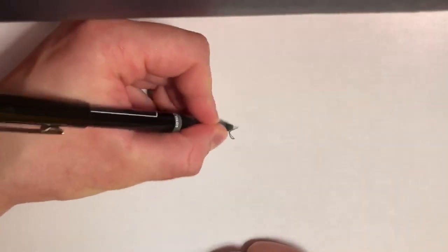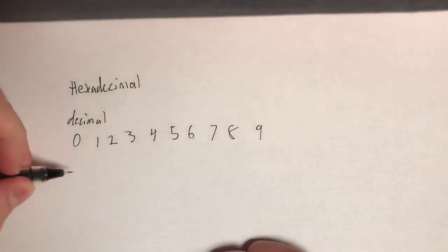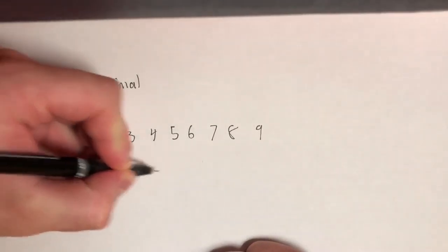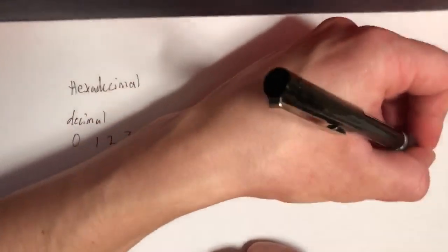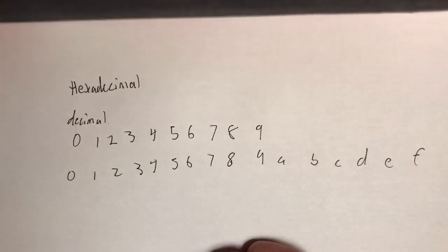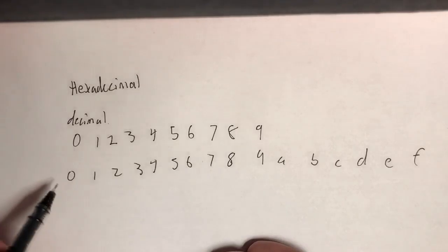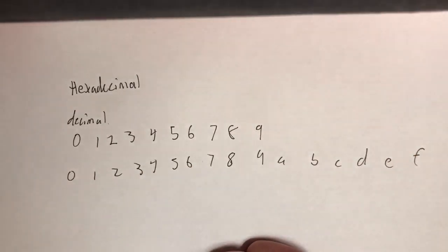So hexadecimal is simply a grouping of four bits into a single digit. Normal decimal is 0 through 9. Hexadecimal is 0 through 9 and then A, B, C, D, E, and F. Each of these represents a different grouping of four bits. There are 16 ways to arrange four bits, and there are 16 symbols here — hence 'hex' and 'decimal', meaning 6 and 10.